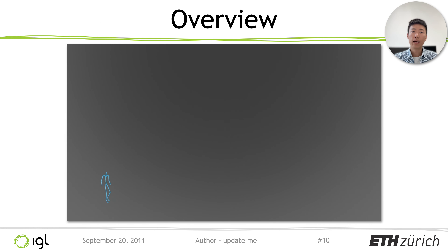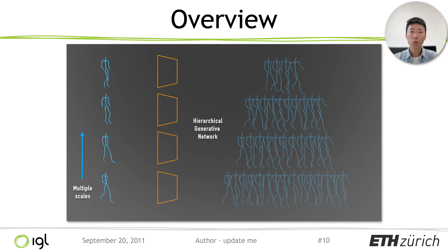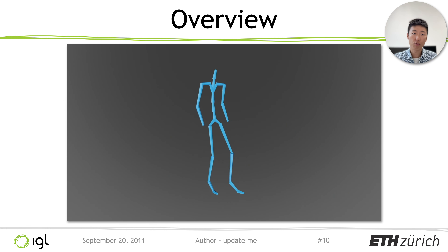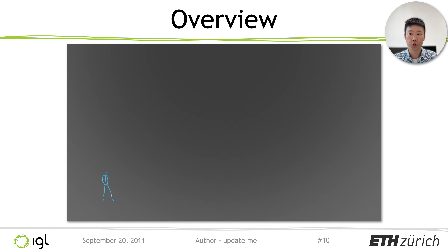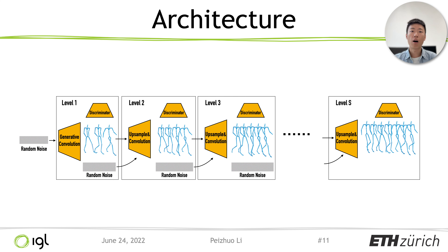Overall, Ganymator leverages information contained within a single motion sequence over multiple scales and time. We use a multiscale hierarchical generative neural network, where each level is responsible for learning the distribution of temporal patches at a different resolution. Starting with a random noise that synthesizes a coarse motion sequence through a generative network, our framework progressively upsamples the motion until it reaches the finest temporal resolution.